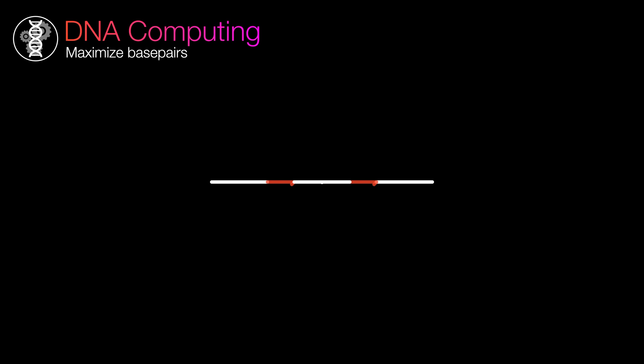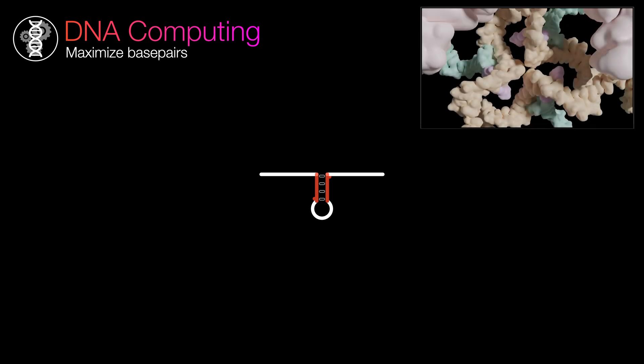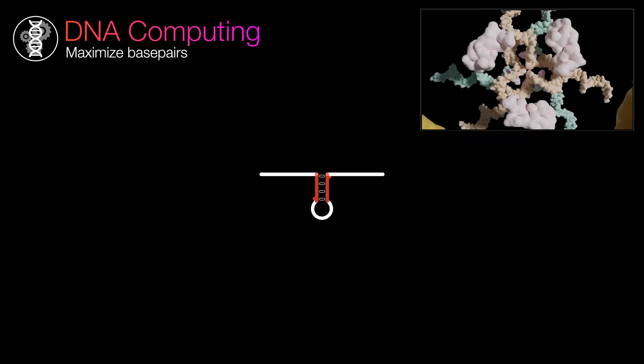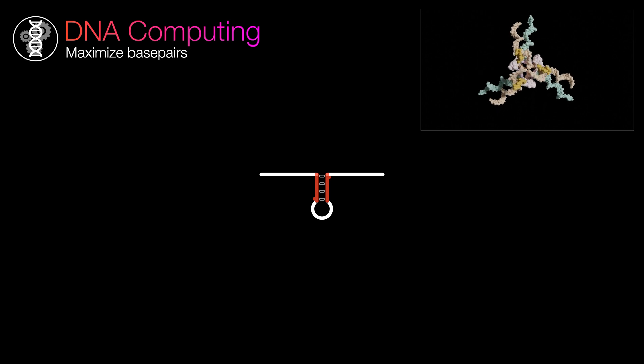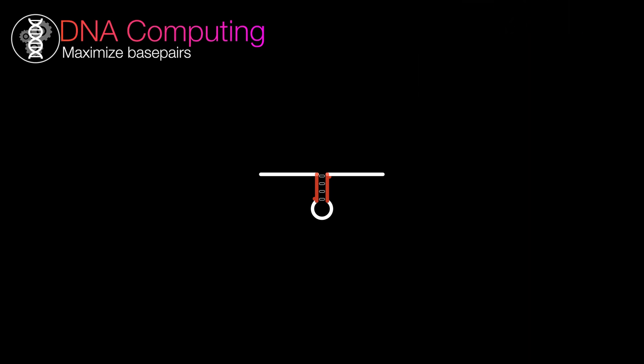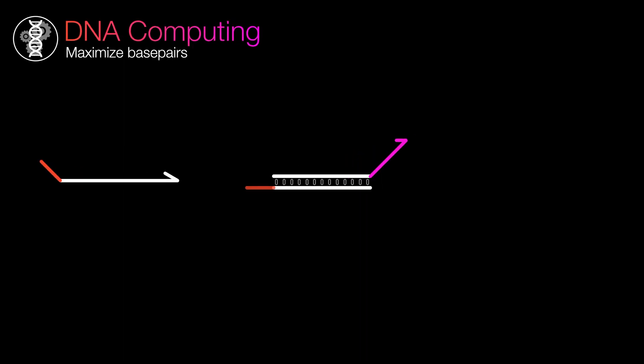Similarly, if you have one strand here and there are two regions that are complementary on one strand, they'll spontaneously try to form base pairs and form this structure called a hairpin loop. This is actually the start of the 3D computing paradigm I alluded to earlier, so stay tuned for that. Now, we can get started on using these in creative ways to make our DNA computer.